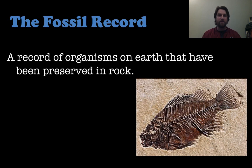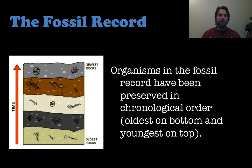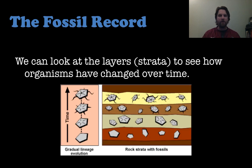So the first thing we have evidence-wise is the fossil record. This is a record of an organism on earth that has been preserved in rock — usually the bones that actually get preserved in rock over time. Organisms are preserved with the oldest on the very bottom and the youngest on top, so the further down you dig, the older the organism is.